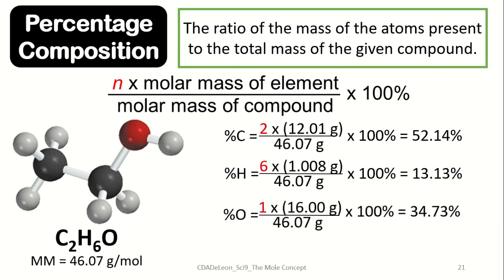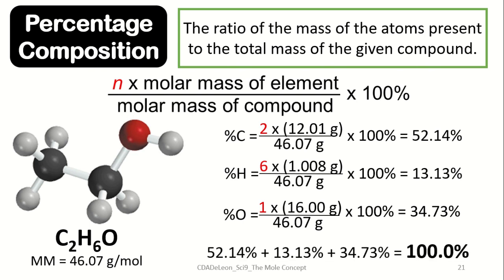And lastly, the percentage composition of oxygen, which has one atom multiplied by its atomic mass of 16, divided by the molecular mass of 46.07 multiplied by 100%, which has a rough estimate of 34.73%. If we add the respective percentage compositions of all the elements, it will be equivalent to 100%, simply because percentages sum to 100.